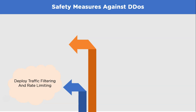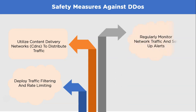Safety measures against DDoS attacks include deploying traffic filtering and rate limiting to detect and block malicious traffic, utilizing content delivery networks (CDNs) to distribute traffic across multiple servers, regularly monitoring traffic and setting up alerts for unusual patterns, and investing in scalable infrastructure to handle sudden traffic surges and prevent service disruptions.